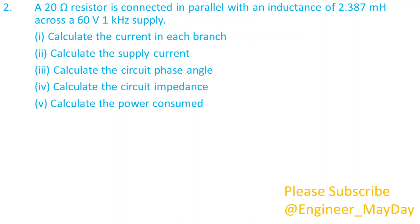Here is a second question. A 20 ohms resistor is connected in parallel with an inductance of 2.387 millihenry across a 60 volts 1 kilohertz supply. 1. Calculate the current in each branch. 2. Calculate the supply current. 3. Calculate the circuit phase angle. 4. Calculate the circuit impedance. 5. Calculate the power consumed.